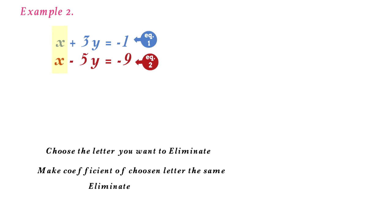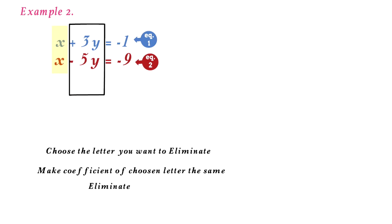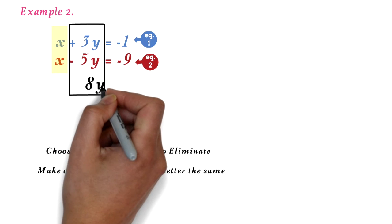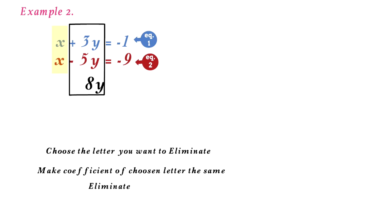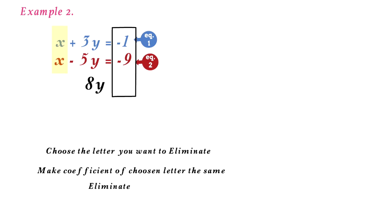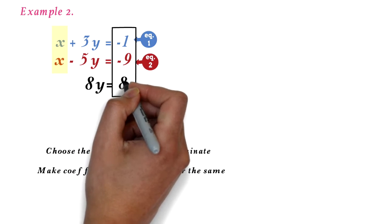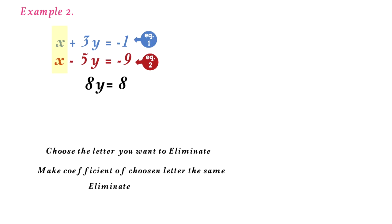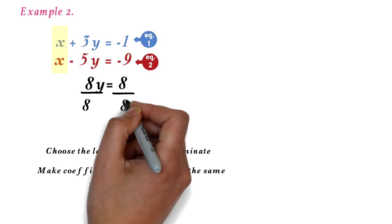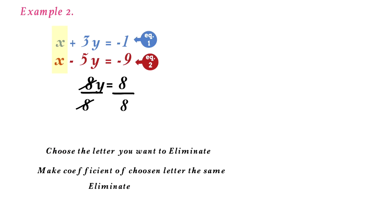The next step is to eliminate the x values. Since both are positive, we can subtract the two equations so that the x value will be 0. x minus x will be 0. 3y minus negative 5y equals 8y — we know that minus negative is addition. Then negative 1 minus negative 9 equals 8. Now we have a simple equation: 8y equals 8. We solve by dividing both sides by 8. The 8 cancels out, and 8 divided by 8 is 1. So y equals 1.